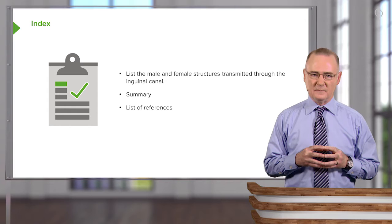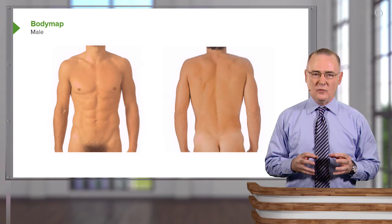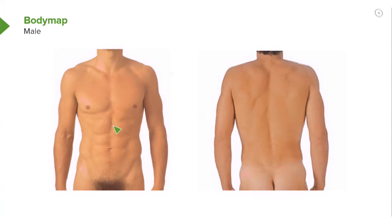Here is our body map to orient you to the areas that we're going to be covering today in this lecture. We will be looking at this area of the anterior abdominal wall. We will explore an orientation to the lateral aspect of the wall, and then we'll also take a look at the posterior portion of the abdominal wall.